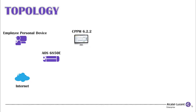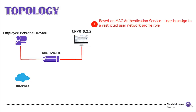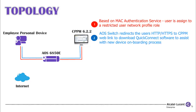Traffic flow for onboarding a wired device: based on the MAC Authentication Service configured on ClearPass, the user is assigned to a restricted user network profile role. The AOS Switch redirects the user's HTTP and HTTPS traffic to the CPPM web link to download the QuickConnect software to assist with the new device onboarding process.